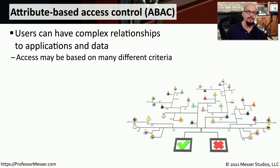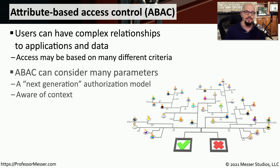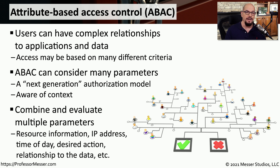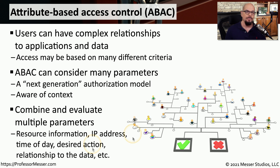With attribute-based access control, we can define a number of different criteria that must be evaluated before allowing someone access to a resource. The system administrator defines various parameters, and as the user tries to access a resource, each parameter is checked and evaluated — such as what type of resource they're accessing, what IP address they're coming from, the time of day, what action they want to perform, and their relationship to that data. Once all parameters are met, the user is granted access.